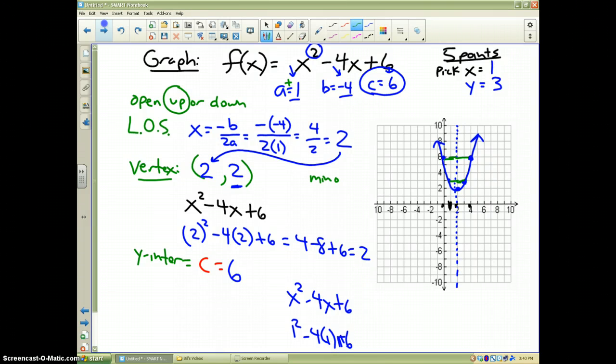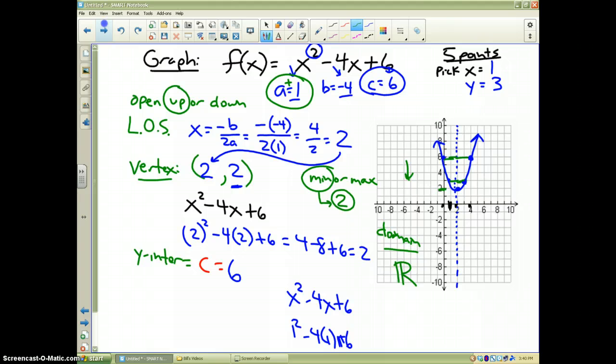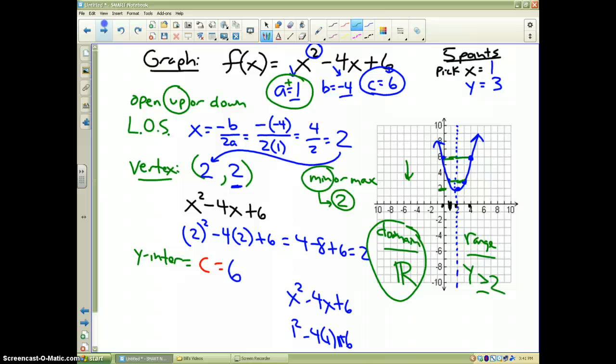Now, does it have a minimum or a maximum? Well, since the a value is positive, it has a minimum. And what is that minimum? That minimum is my y value right here, which is 2. That's the smallest the graph, or the lowest in the range that the graph gets. Well, what's the domain? Well, from the earlier slide, I told you the domain is all real numbers. For quadratics, your domain will always be all real numbers. What's the range? Well, the range, as I told you on the prior slide, is, if it's a minimum, the y values are all greater than or equal to whatever that minimum value is, which is 2. So my graph, the lowest it gets is 2, and it goes up from there. So therefore, my range are all numbers greater than or equal to 2. And that is how you graph a quadratic using the A, B, and C values in standard form.